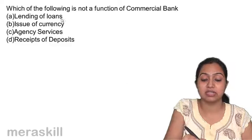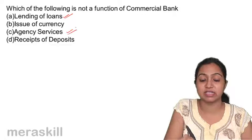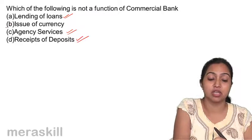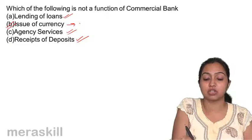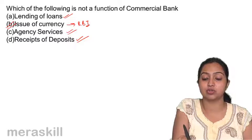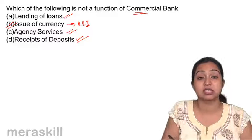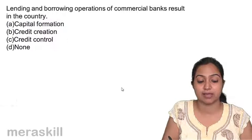Which of the following is not a function of a commercial bank? Lending of loans is a function. Agency services is a function. Receipts of deposits is a function. But issue of currency is a function of the RBI — the RBI issues currency, not commercial banks. So, issue of currency is not a function of commercial banks.